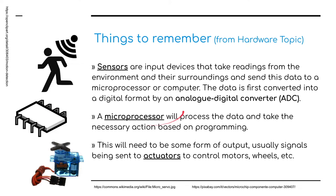The microprocessor does all the processing of the data collected from the sensors. Actuators move things about — generally motors and things that control an object. For example, if we're in a greenhouse and it is too hot, the sensor picks up on the temperature, and the microprocessor will tell the actuator to open the windows. A motor will drive an arm which will open the windows.